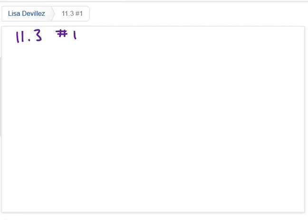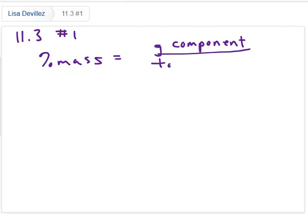We're doing a percent mass, which is essentially the grams of our component that we're interested in over the total grams, and then it's a percent, so it's times 100.